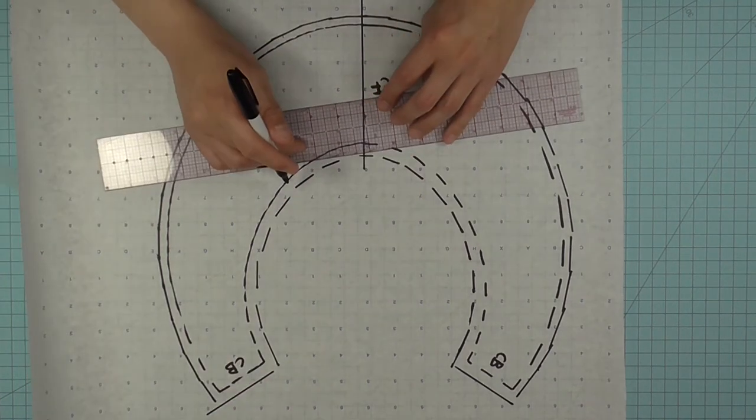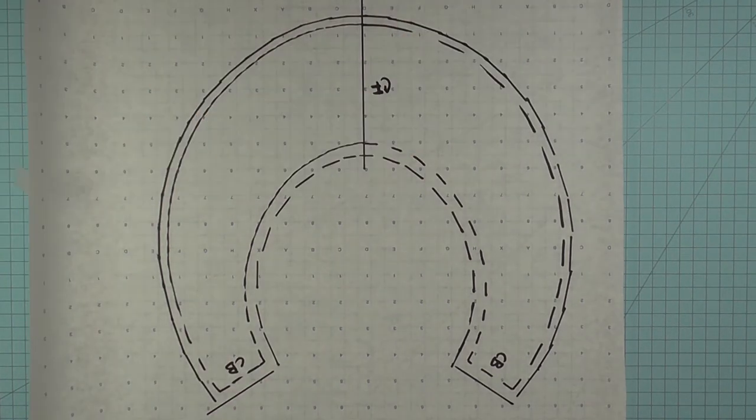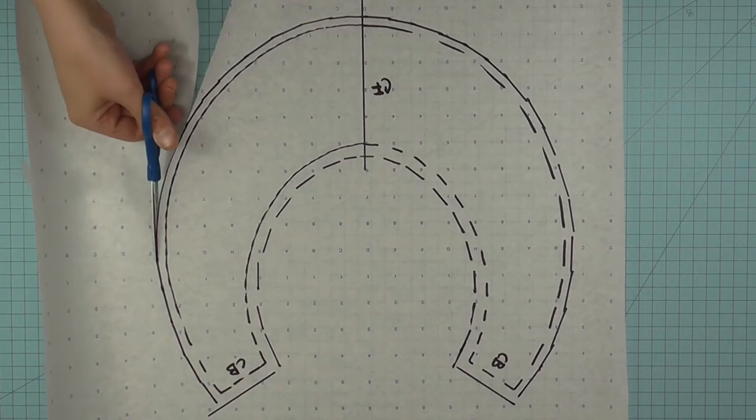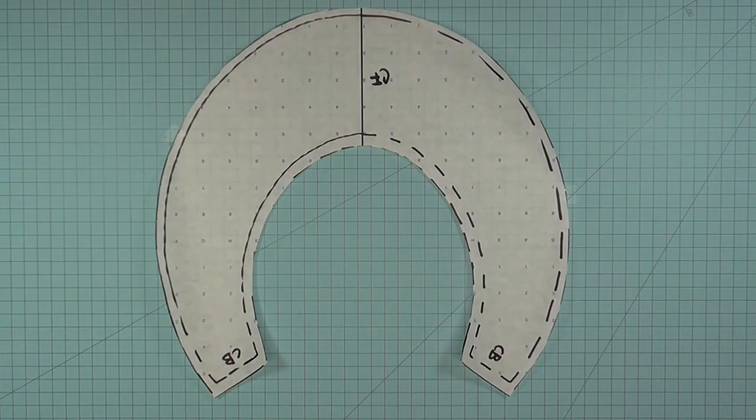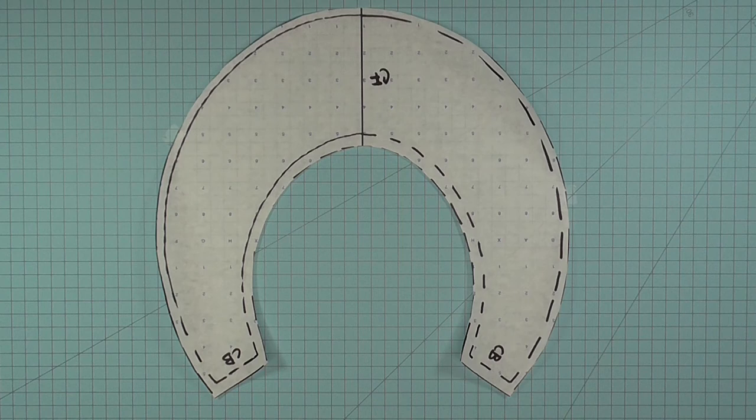And this is what your piece should look like when all the seam allowance has been added. You can now cut out your pattern piece to test. Notches get added the same way as the basic bucket hat. So basically, it's the middle between center back and center front. And of course, always keeping a notch at center front.